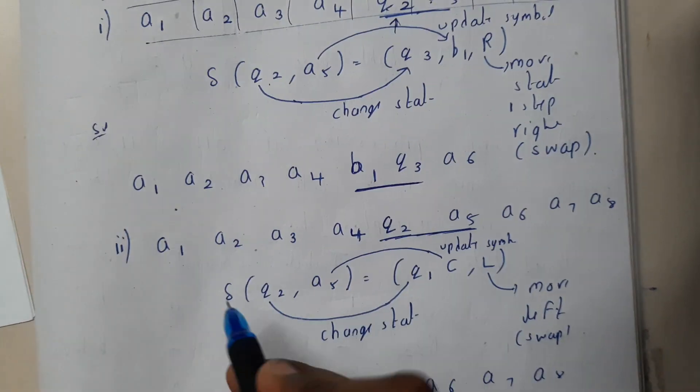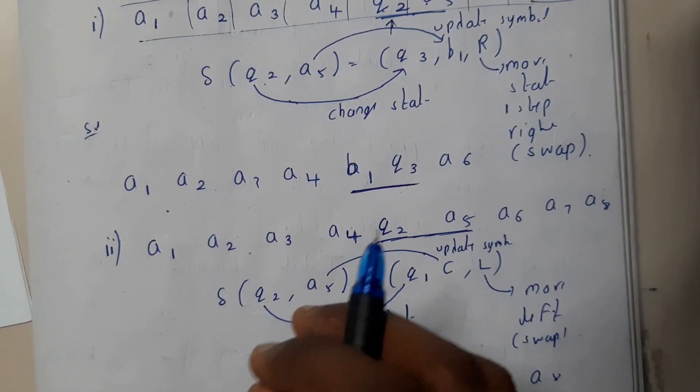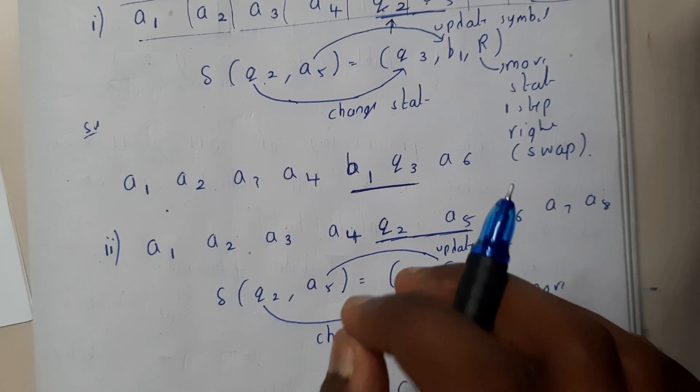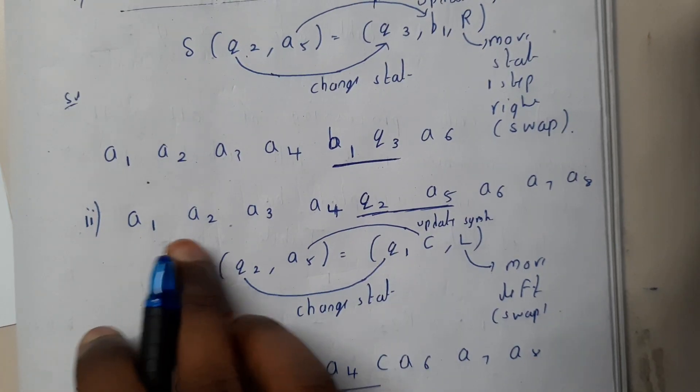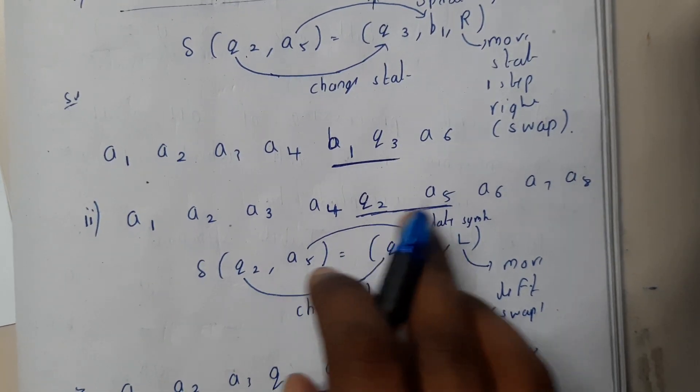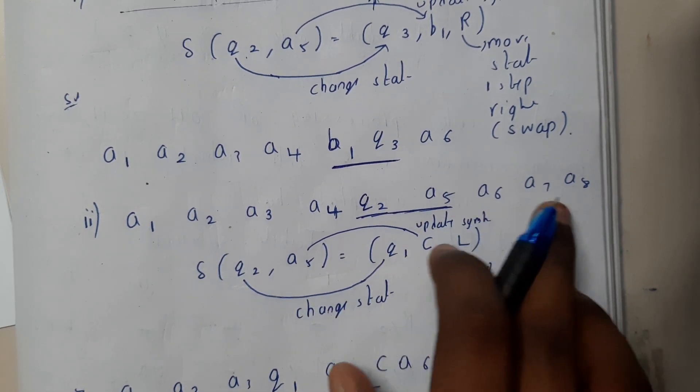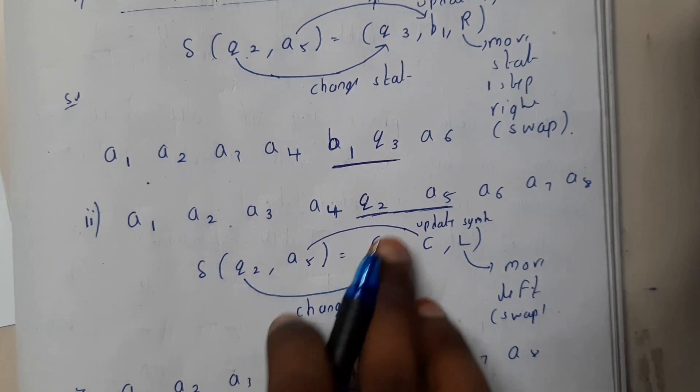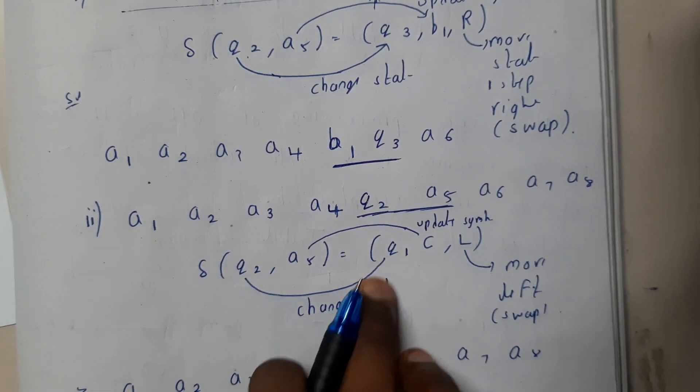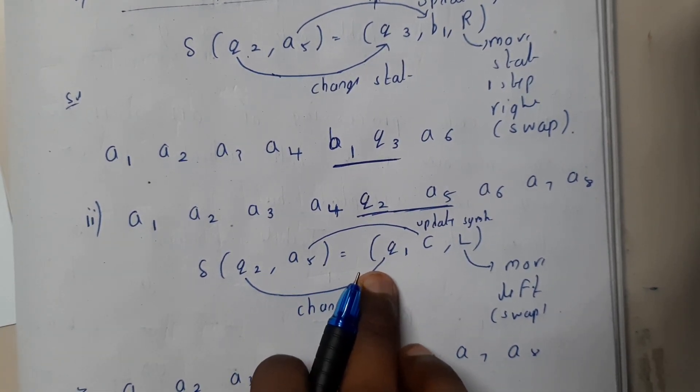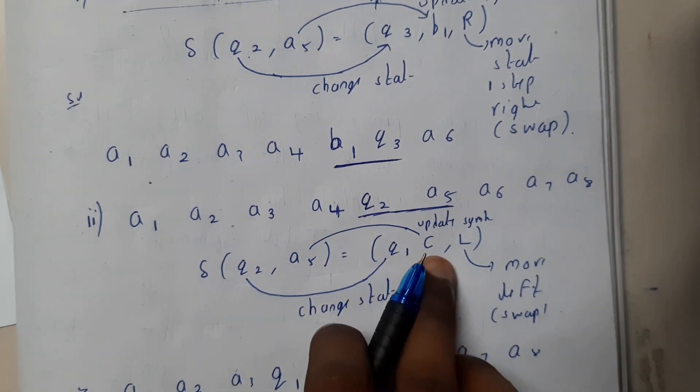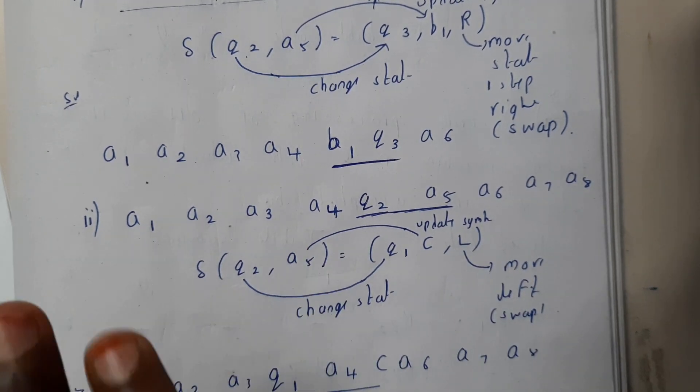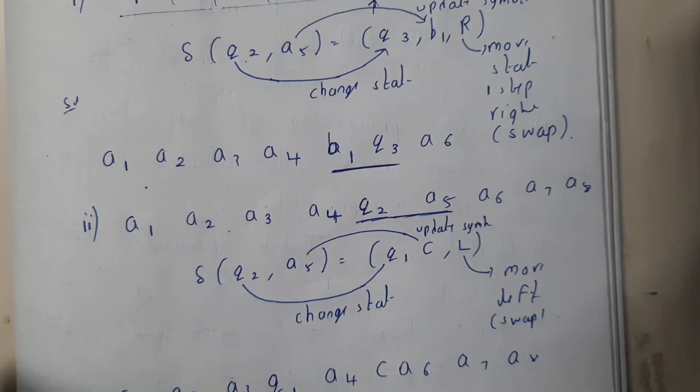When we come to left movement, left movement is really interesting and you need to concentrate. a1, a2, a3, a4, q2, a5, a6, q7, a8. You are doing operation on q2 and a5. In place of q2 you will be writing q1, in place of a5 you will be writing c, and you will move one step left.